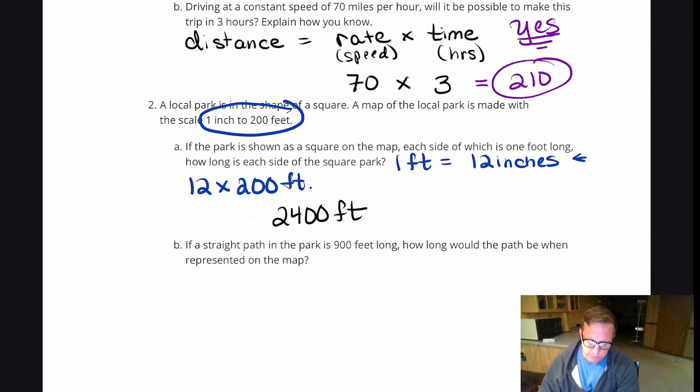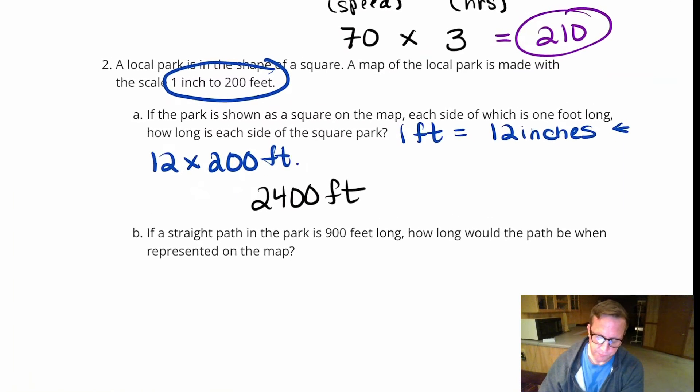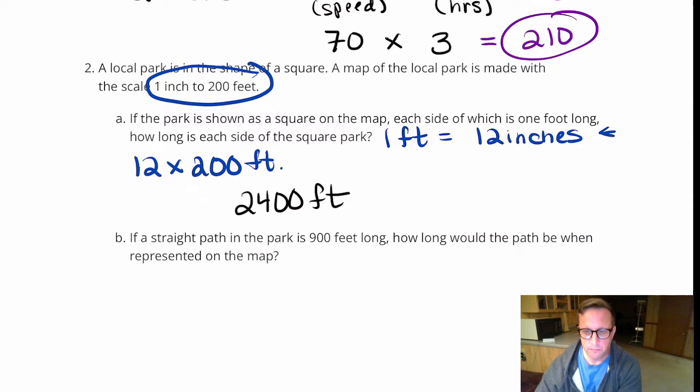Alright, if a straight path in the park is 900 feet long, how long would the path be when represented by the map? So we've got a straight path in the park is 900 feet long. How long would the path be when represented on the map?